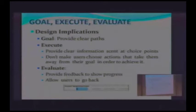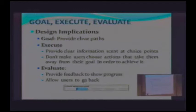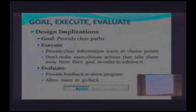So what are some of our design implications? You want to provide clear paths to your goals. You want to help your users whenever possible. When it comes to executing, you want to make sure that you provide your user with sufficient and clear information so that they can choose the action they need to take to accomplish their goal. For evaluate, you want to provide feedback that shows progress, so that it makes it easier for your user to evaluate where they are in terms of accomplishing their sub-goals and primary goals.